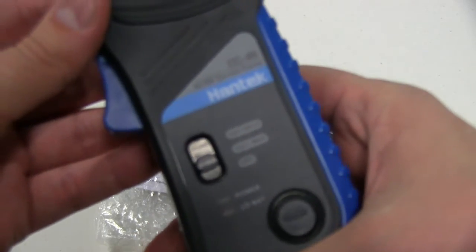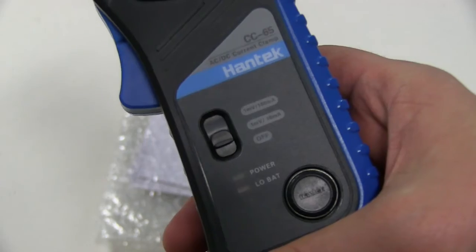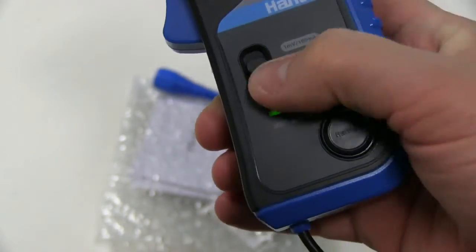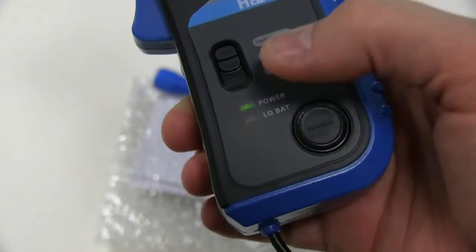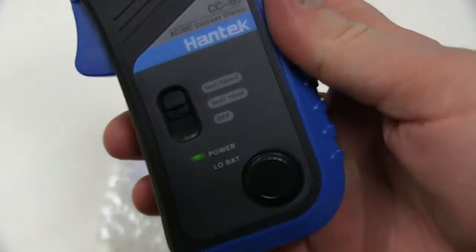And I'll just show you some of the details. So you've got the range selection switch there on the front. As you can see, it's off at the moment. And you can go to 10 milliamp per millivolt or 100 milliamp per millivolt. There's a battery indicator and a low battery indicator, and then there's this zeroing button there.